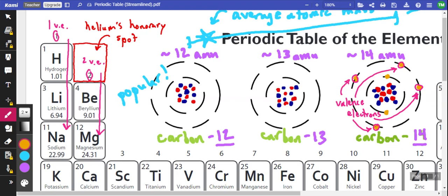And everything in column one has just one valence electron. Hydrogen, lithium, sodium, potassium, cesium is down there. All those guys only have one valence electron.